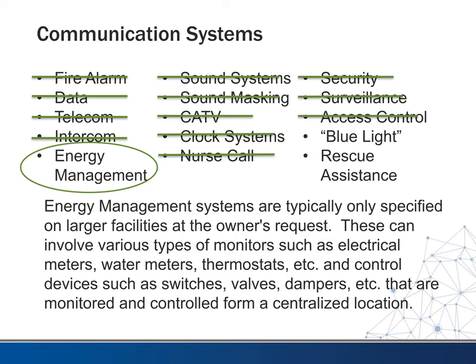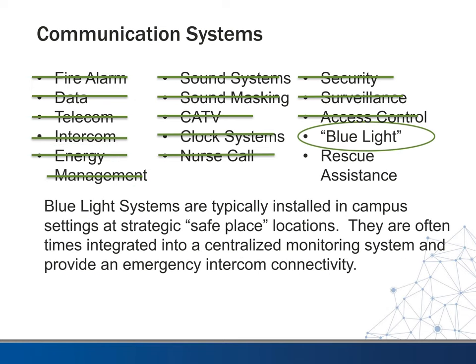In some larger buildings you'll see energy management systems. With these, you'll have to pick strategic locations and set boxes for energy-consuming types of devices — many times that's HVAC, lighting controls, and things of that nature. Blue light systems, which you'll see on college campuses or in public areas, are pedestals strategically placed where if someone doesn't feel safe, they can push a button for a direct intercom to security, or pick up a handset that will automatically call the police.